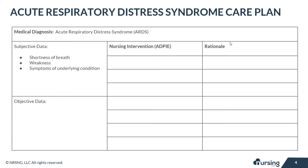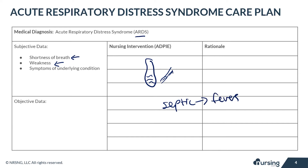Starting with subjective data: the patient with ARDS will experience shortness of breath and weakness. The fluid surrounding or filling the alveoli prevents the lungs from properly oxygenating the blood, causing these symptoms. The patient may also have additional symptoms related to the underlying condition — for example, if the patient is septic, they'll likely have fevers.